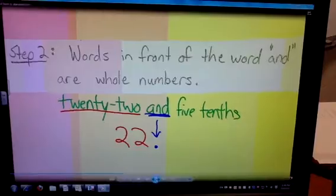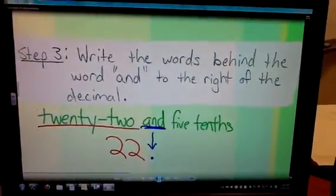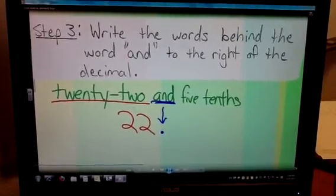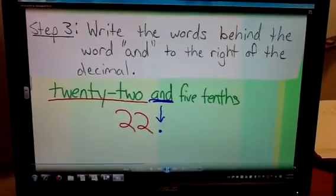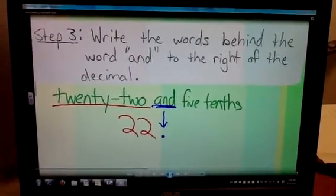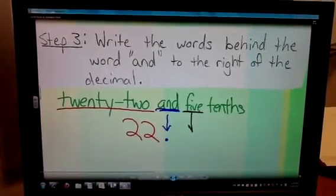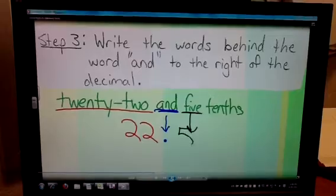Moving on to step number three. Write the words behind the word AND just to the right of the decimal. So I look for the words behind the word AND, and I come to this one: five. I'm simply going to write it to the right of the decimal.